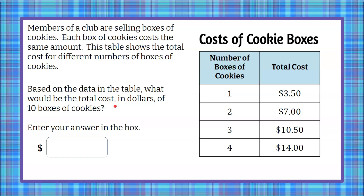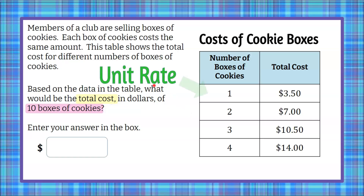Welcome back. So we're going to find the total cost of 10 boxes of cookies using this table. To do this, I'm going to identify what I call unit rate. Unit rate is the cost for one box of cookies. So we can see that one box of cookies is going to cost $3.50.